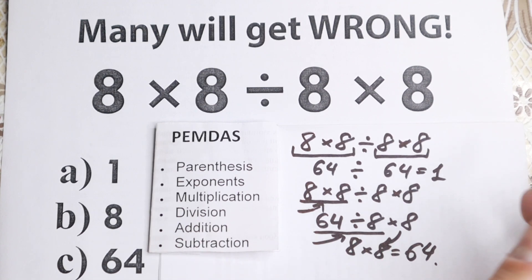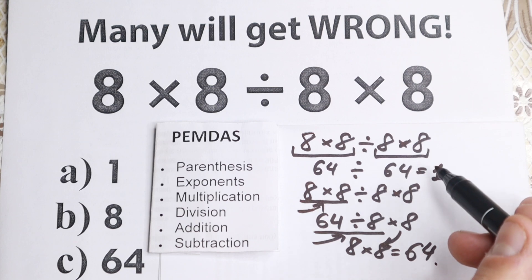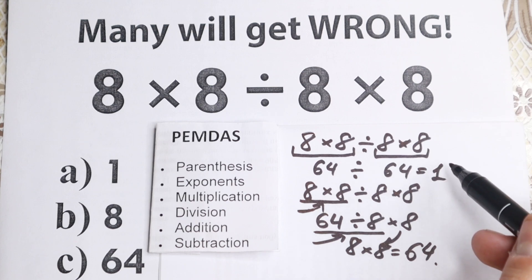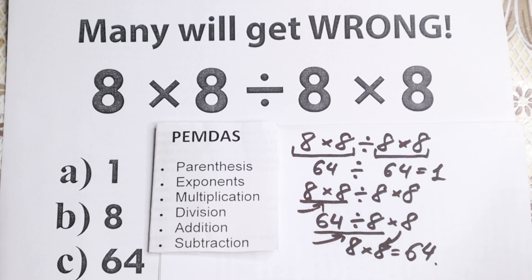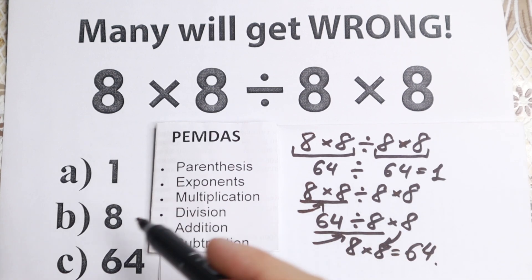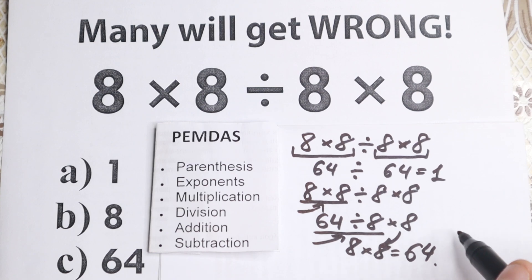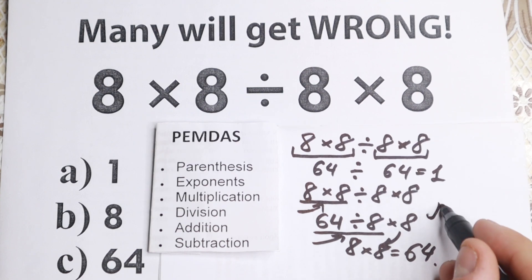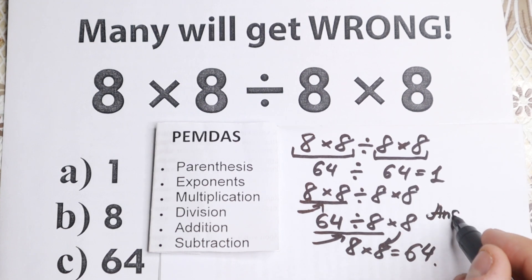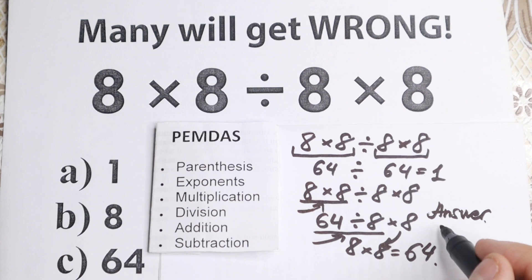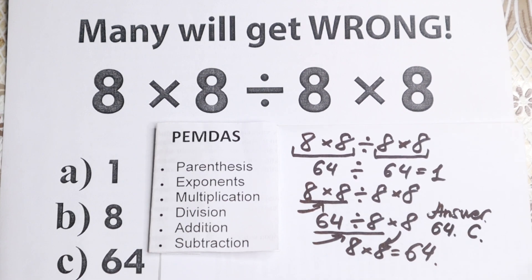And as you can see, according to PEMDAS order we get option C — 64. The common mistake gives an answer of 1, but the correct answer is 64, option C. This is the correct answer to this problem.